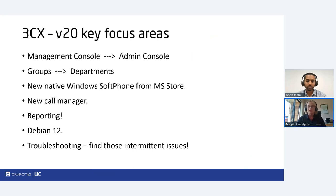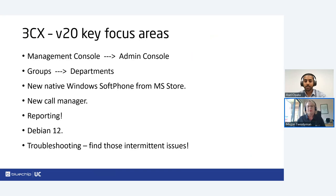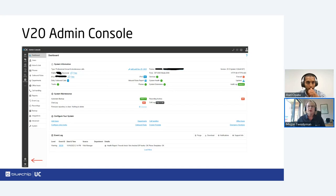The latest Debian 12 is used for Version 20. Debian 12 was released in July 2023; Version 18 is built on Debian 10. As you go through the upgrade pathway, you'll move from Debian 10 to Debian 11 to Debian 12 — there is no rollback. Going straight to Debian 12 provides a lot of future-proofing. There's also a new troubleshooting tool coming; end users at the extension level will be able to initiate it and start troubleshooting to isolate where issues are occurring.